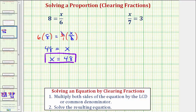Of course, we can easily check this by performing substitution. The original equation is eight equals x divided by six and x equals 48. So we'd have 48 divided by six and 48 divided by six is eight. So our solution checks.